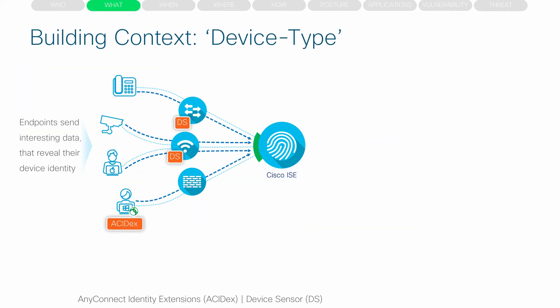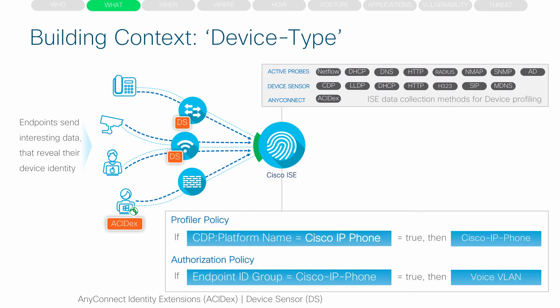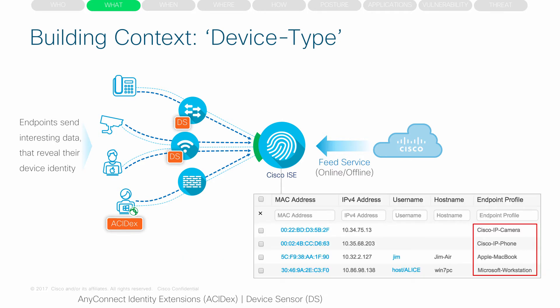WHAT — what device is it? Each endpoint that shows up in the network sends out some interesting traffic that reveals the endpoint type. For example, the DHCP class identifier 'MSFT' tells us it's a Microsoft workstation. Either this traffic hits directly to ICE, or we can use a feature on network devices called the device sensor that caches such traffic and passes it on to ICE over RADIUS. Once ICE receives the attributes, based on the profiling policy it can classify the endpoint into specific device groups. With the help of a feed service, we can keep the profiling policies up to date, resulting in an endpoint profile associated to the endpoint's MAC address.